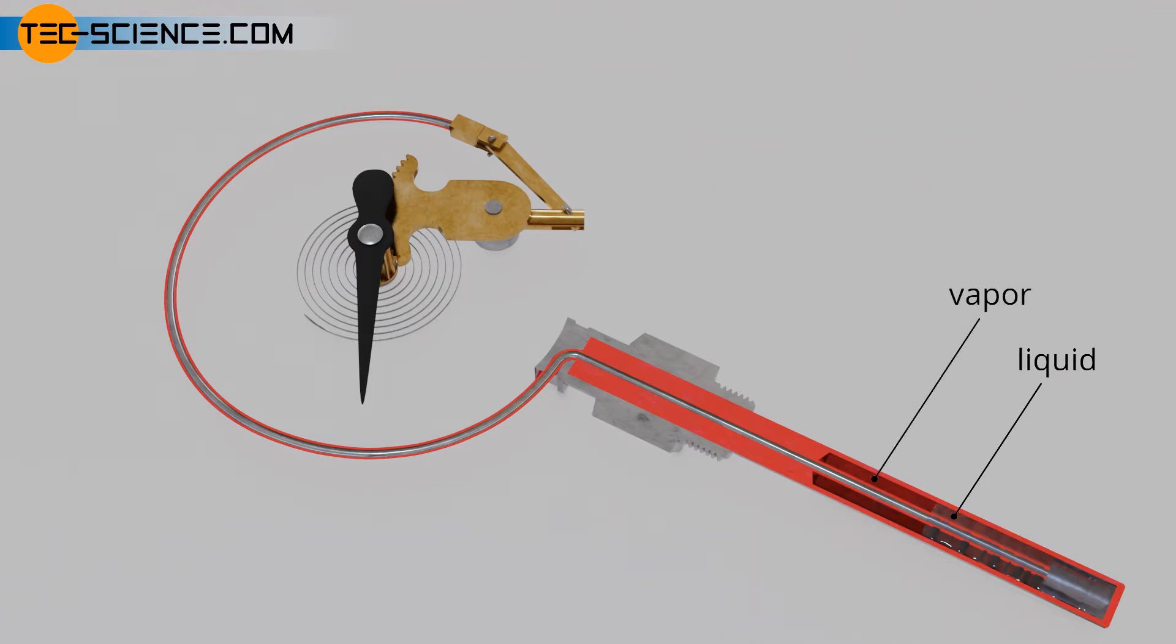As a result, the pressure rises until an equilibrium between the liquid phase and the gas phase is reached. In simple terms, the rising pressure causes the vaporizing particles to be forced back into the liquid state. This equilibrium between vapor and liquid depends on the temperature.